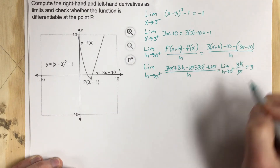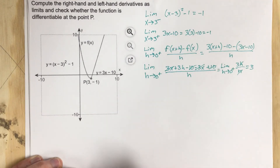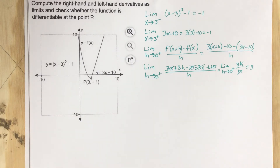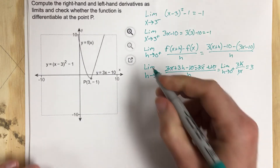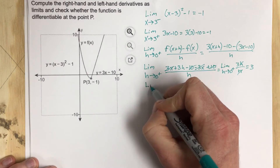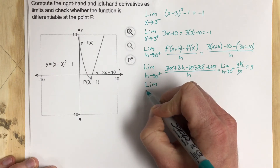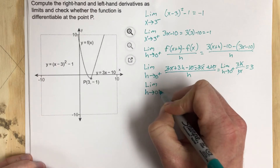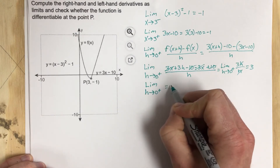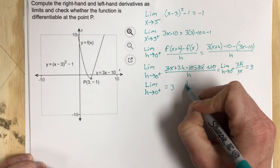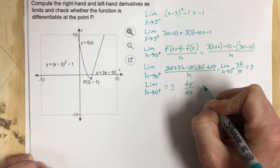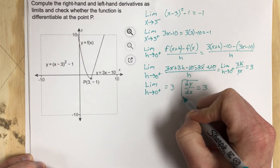That equals 3 because the h's cancel. Remember, this is from the right. So the limit as h approaches 0 from the right is 3, meaning the right-hand derivative dy/dx equals 3.